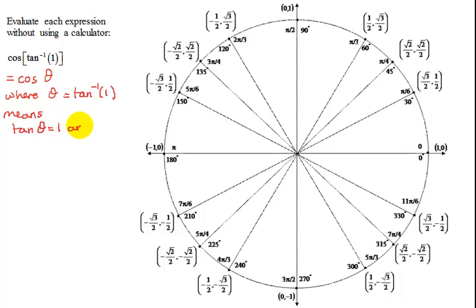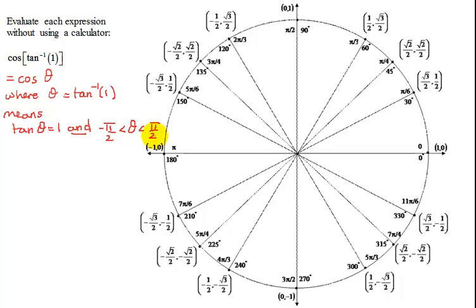Remember, inverse trig functions have restrictions on them. The restrictions on the inverse tangent say my answer has to lie — or theta has to lie — between negative pi over 2 and pi over 2.